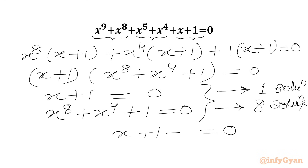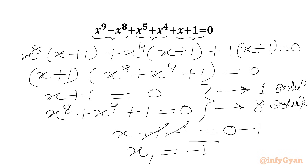Let us begin with the first equation: x plus 1 equal to 0. Subtracting 1 from both sides, we get our first solution, which is real: x₁ equal to minus 1.